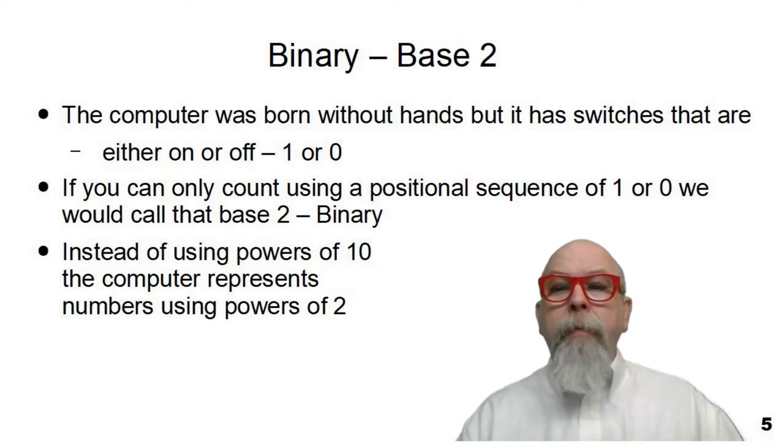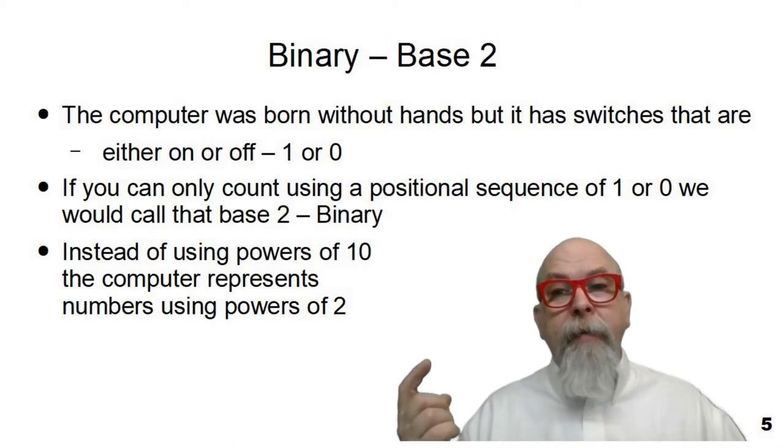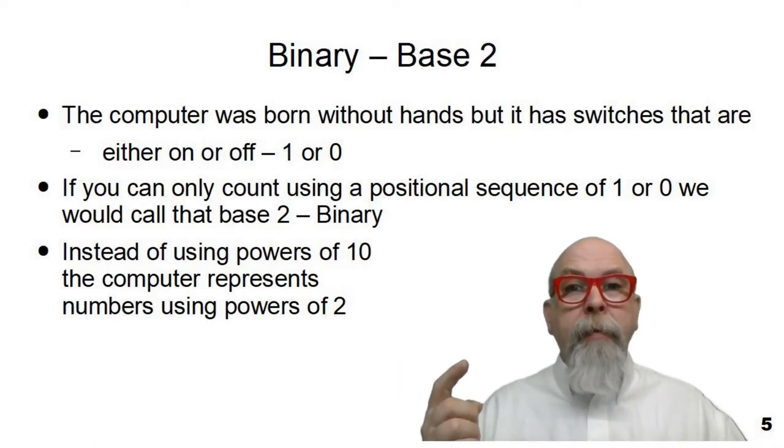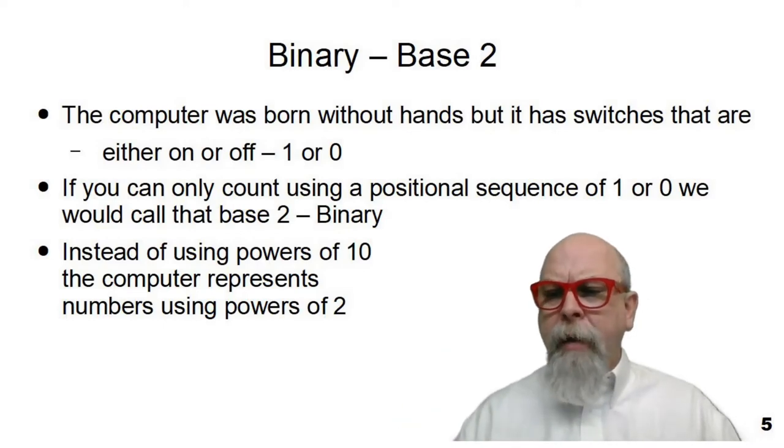You count by using binary, by using powers of 2 instead of powers of 10. So the rightmost digit of a binary integer would be 2 to the 0th, or 1. The next one would be multiplied by 2, the next one by 4. We'll see more of that in the next couple of slides.